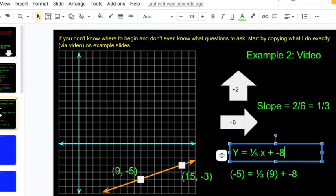Double check my adjustment with my other point. 1 third of 15 is 5. 5 plus negative 8 is negative 3. All good.